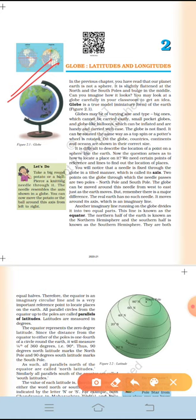Now as we know that it is difficult to describe the location of a point on a sphere shape like the Earth. So now the question is how to locate a place on it? To locate a place we need certain points of reference and lines to find out the location of a place. So one such important reference point is pole.